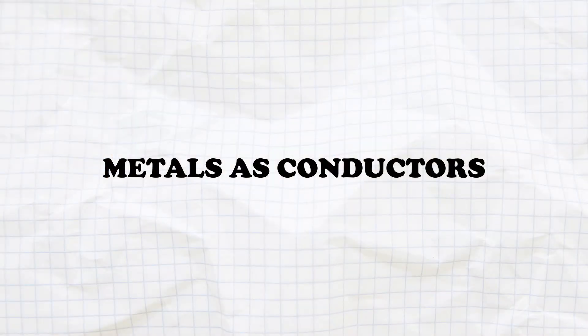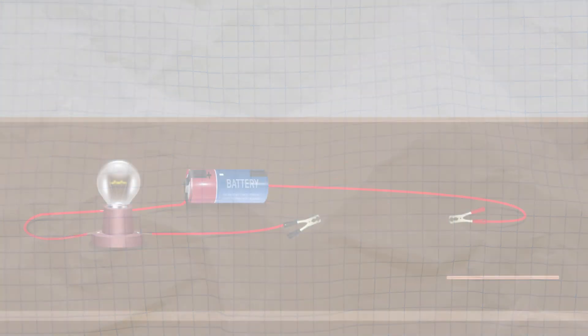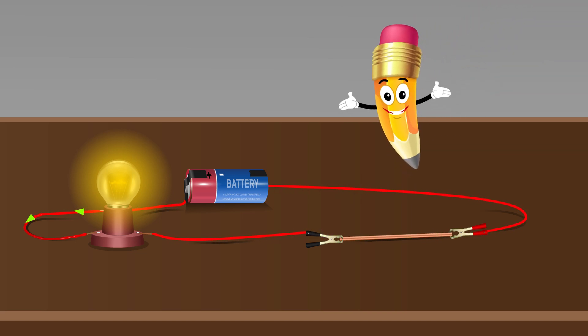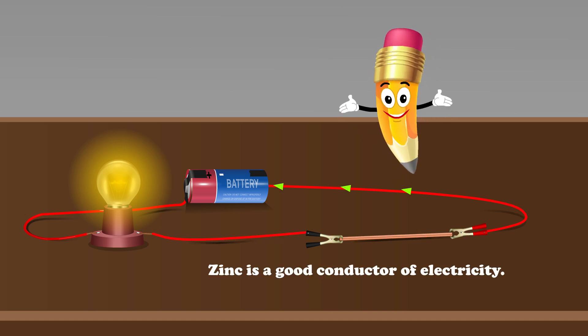Metals as conductors. Let's start with our first metal, zinc. When we connect the zinc to our circuit, the electric cell produces electricity that travels through the copper wires. Look! The bulb glows brightly, demonstrating that zinc is a good conductor of electricity.